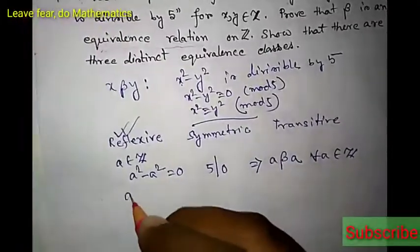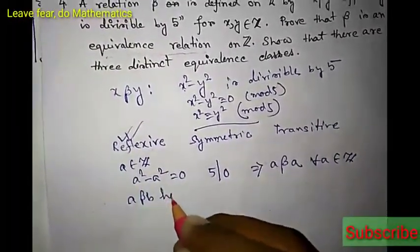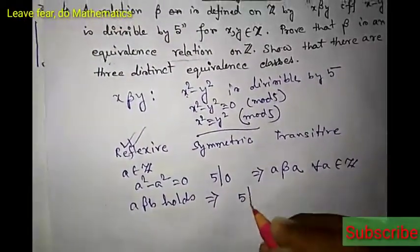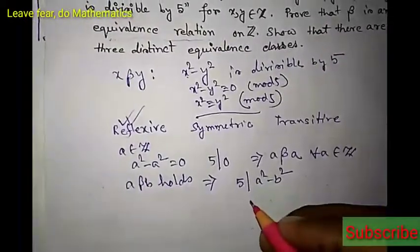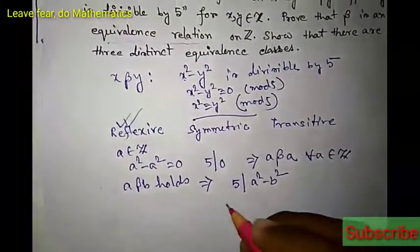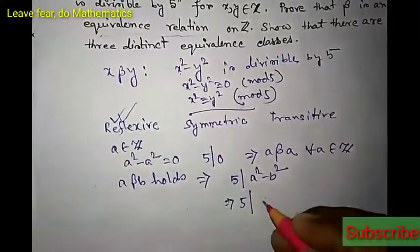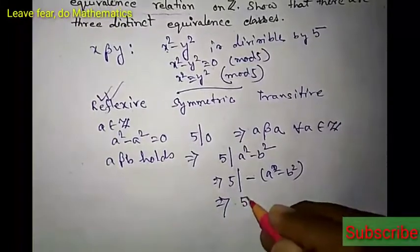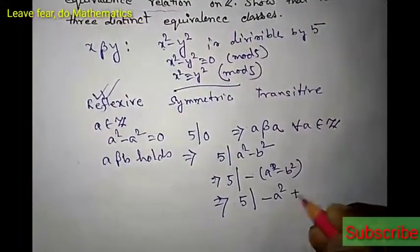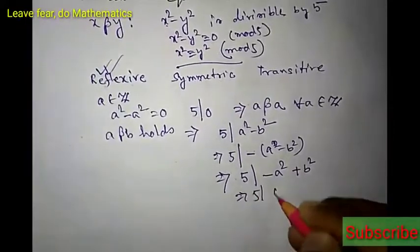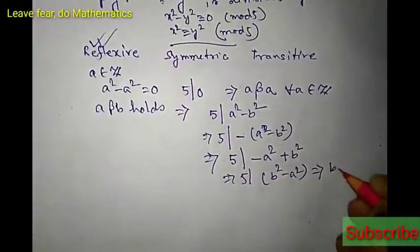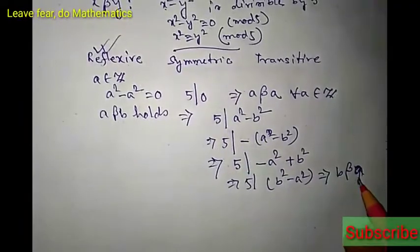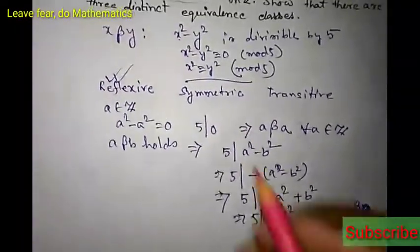Now for symmetry: let a beta b hold, that is a is related to b. This implies 5 divides a squared minus b squared. Since 5 divides a squared minus b squared, 5 will also divide the negative of that, which is b squared minus a squared. This implies b is related to a. So whenever a is related to b, then b is also related to a. This relation is symmetric.